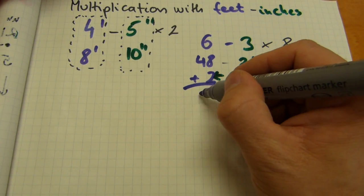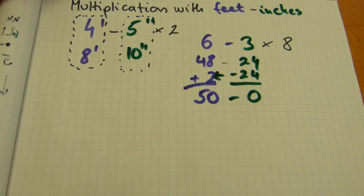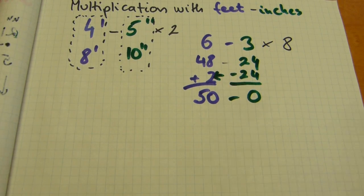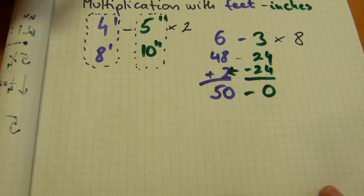And you have to add it to whatever amount is already in the feet column. So 48 plus 2 is just 50. 50 feet zero inches is the total of this multiplication, and there's nothing to convert, you just have a little bit of carry over here. That's how these work.